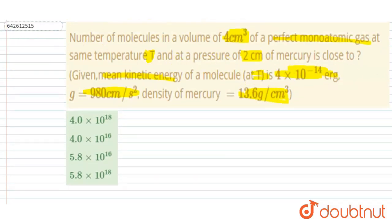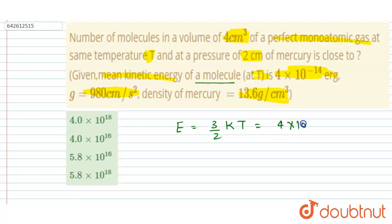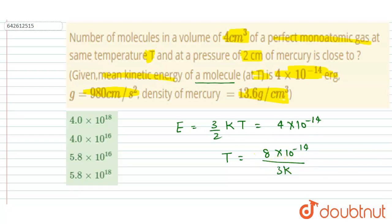Looking at the mean kinetic energy, for a molecule the mean kinetic energy equals 3/2 kT. Using the given value, we can write the temperature T equals 8×10⁻¹⁴ divided by 3k. So this will be our temperature.